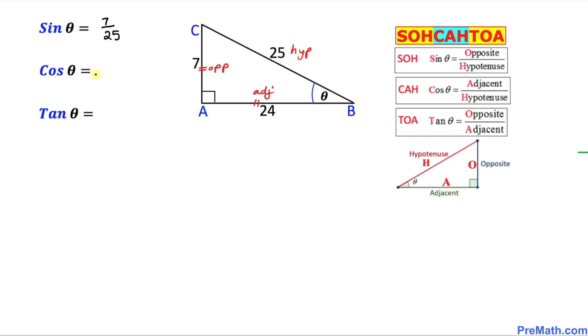How about cosine theta? Cosine, if you look at it, it is adjacent over hypotenuse. In our case, adjacent is 24 and the hypotenuse is 25. That's it.